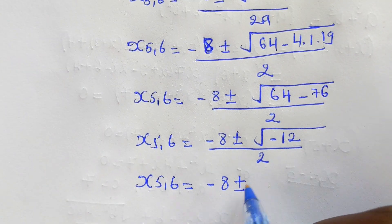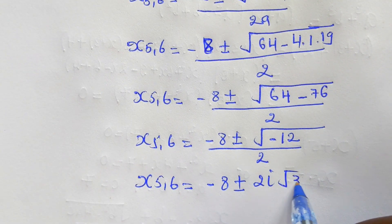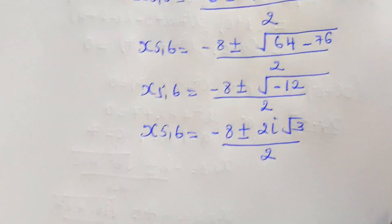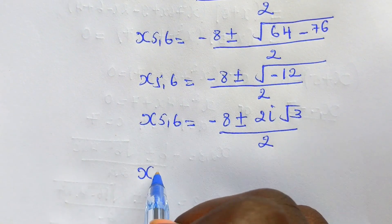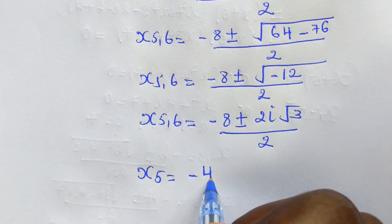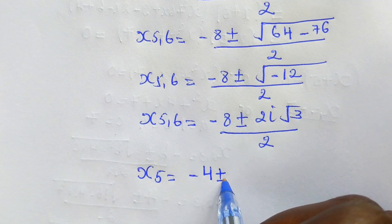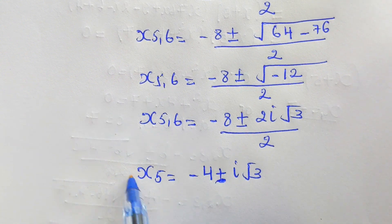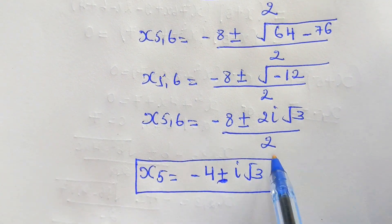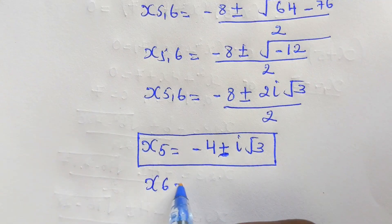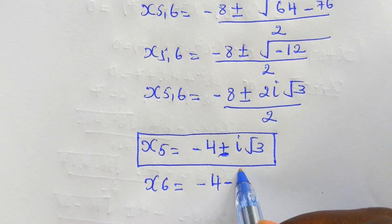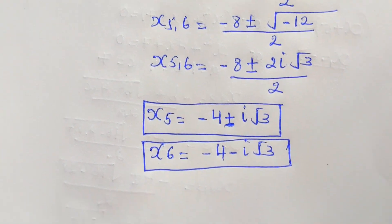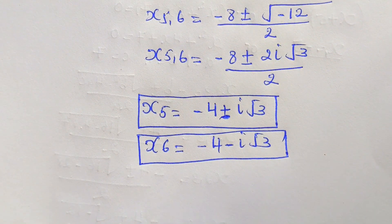Therefore x5 = -4 + i√3 and x6 = -4 - i√3. These are the six values of x. Thanks for watching, don't forget to share and subscribe.